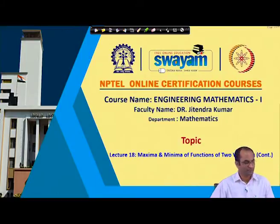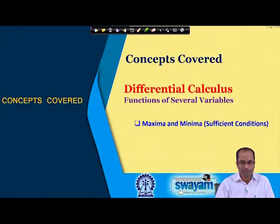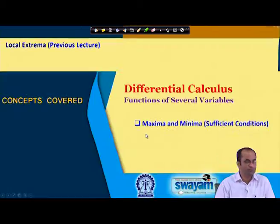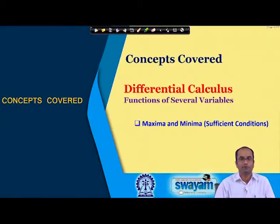Welcome back to the lectures on Engineering Mathematics 1. This is lecture number 18. We will be talking about the maxima and minima of functions of two variables. In particular, today we will be talking about the sufficient conditions, which will be used for characterizing critical points — whether a point is a local maximum, local minimum, or a saddle point.